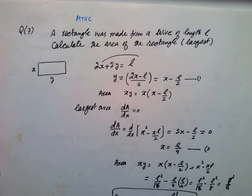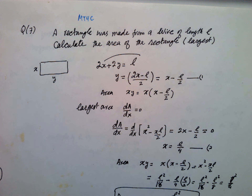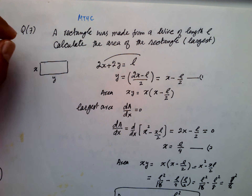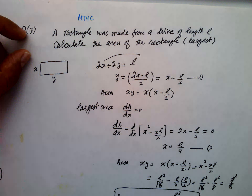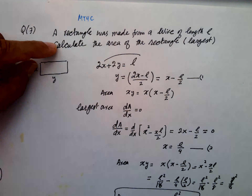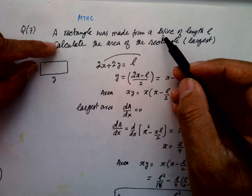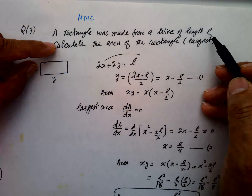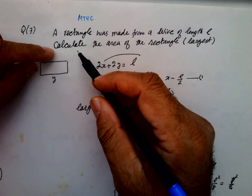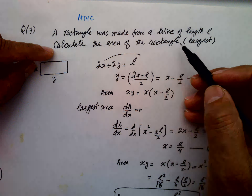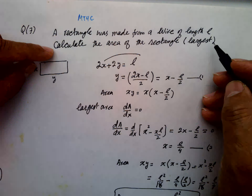Hello, Advanced Mathematics, MT4, Part C, Question number 7. A rectangle was made from a wire of length L. Calculate the area of the rectangle which is the largest.